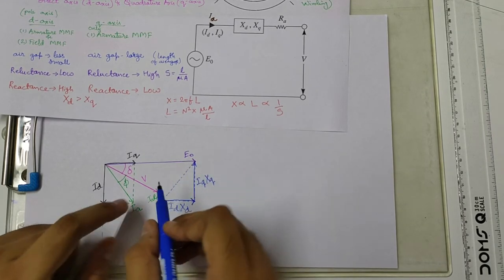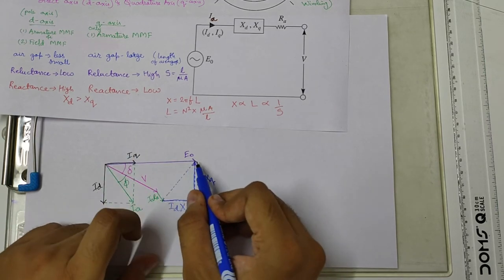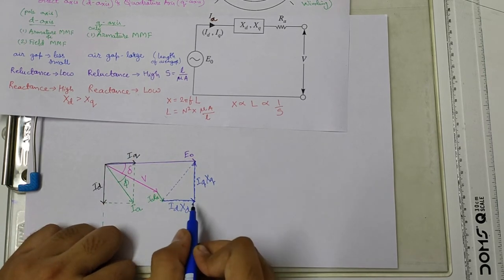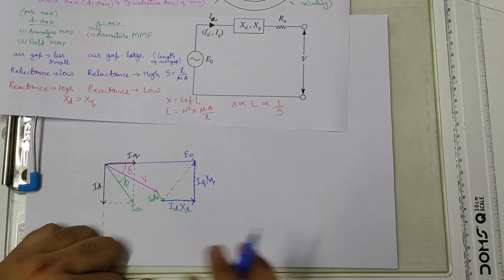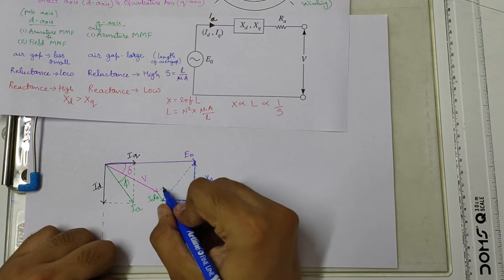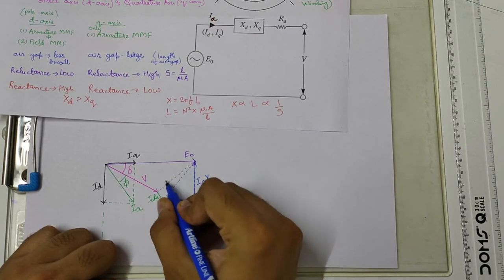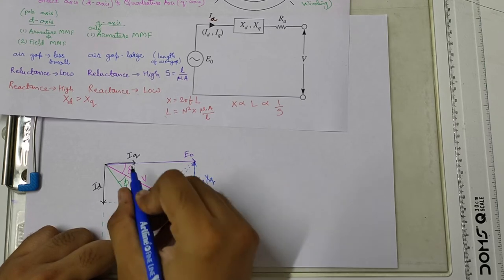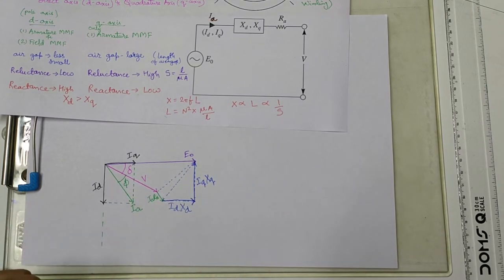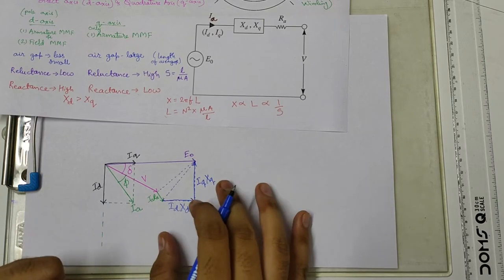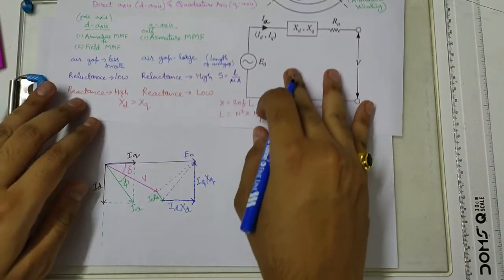The total drop consists of IQ·XQ, then ID·XD, then IA·RA, and after all these drops we get the terminal voltage V. So the equation is: E0 = V + j·ID·XD + j·IQ·XQ + IA·RA. This is the phasor diagram for a salient pole synchronous machine.